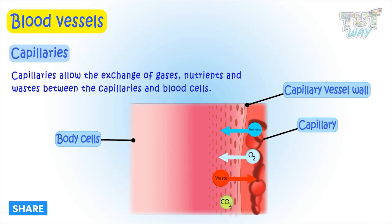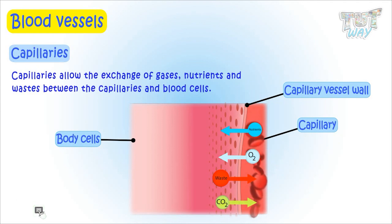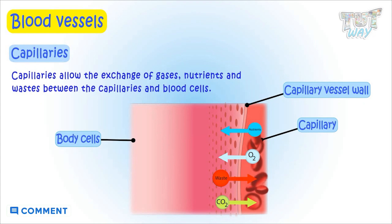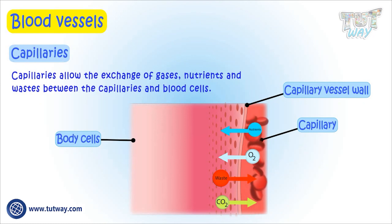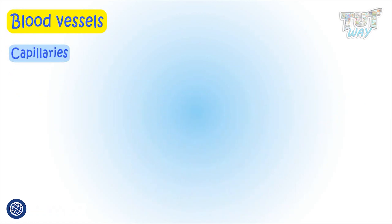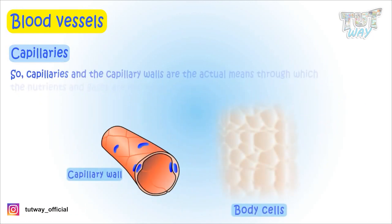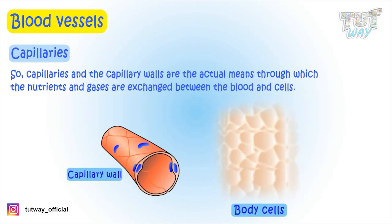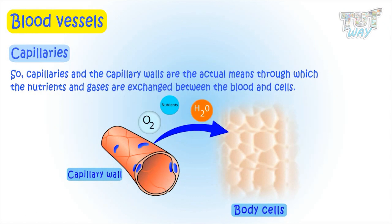This enables the exchange of nutrients and gases between the cells and the blood. Capillaries and the capillary walls are the actual means through which the nutrients and gases are exchanged between the cells and the tissues.